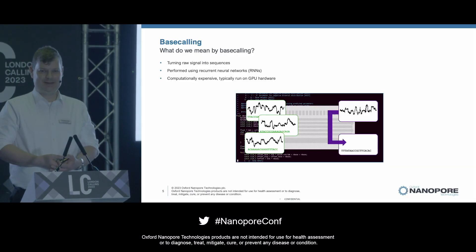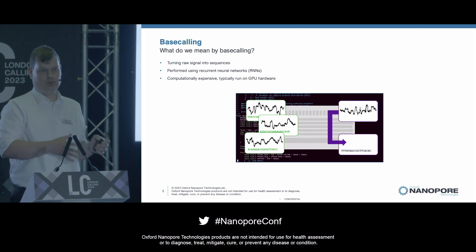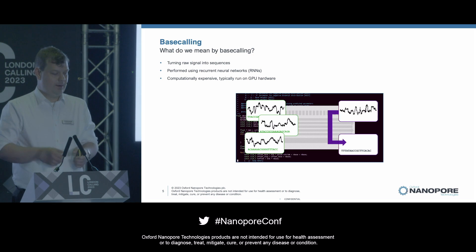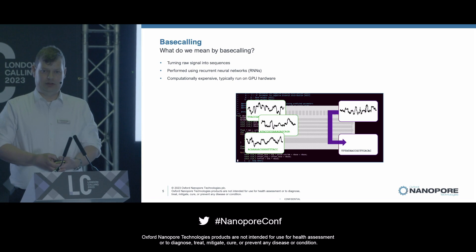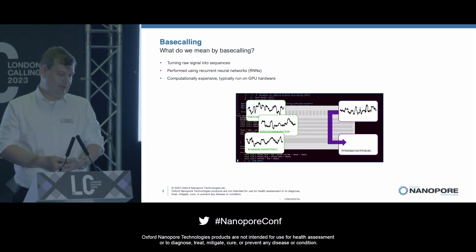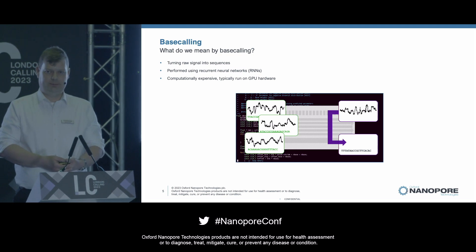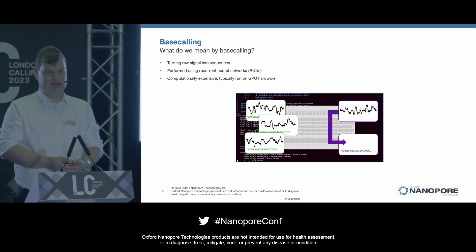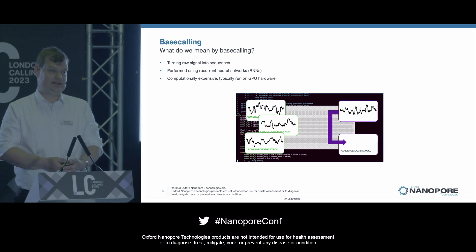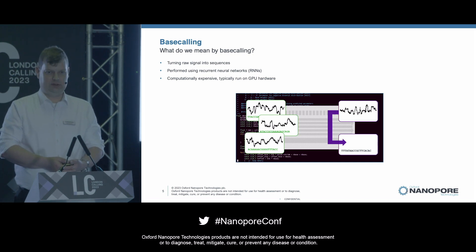Hopefully everyone knows what I mean when I talk about base calling, but just in case — base calling is the process of turning the raw signal which comes off the instrument back into the set of DNA or RNA bases, which were the molecule that went through the pore — the information that you actually want to get from the sequencer. Oxford Nanopore's base callers are all based on machine learning methodologies; we use something called a recurrent neural network. It's very computationally expensive, and so typically we're running our base callers on NVIDIA GPU devices to get the performance that we want.